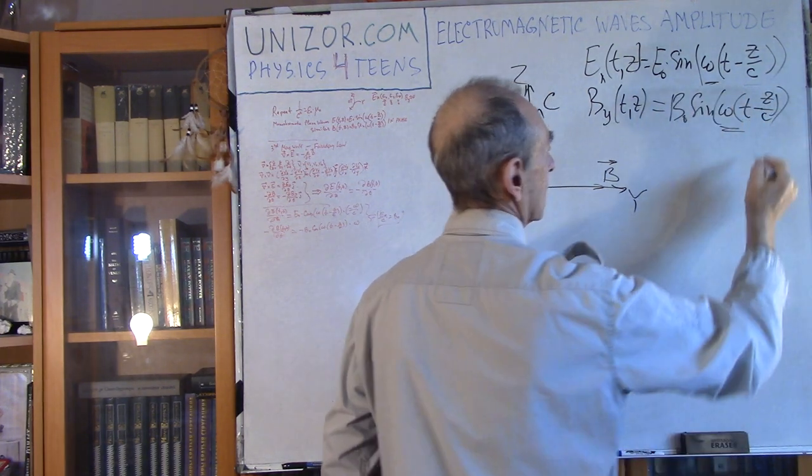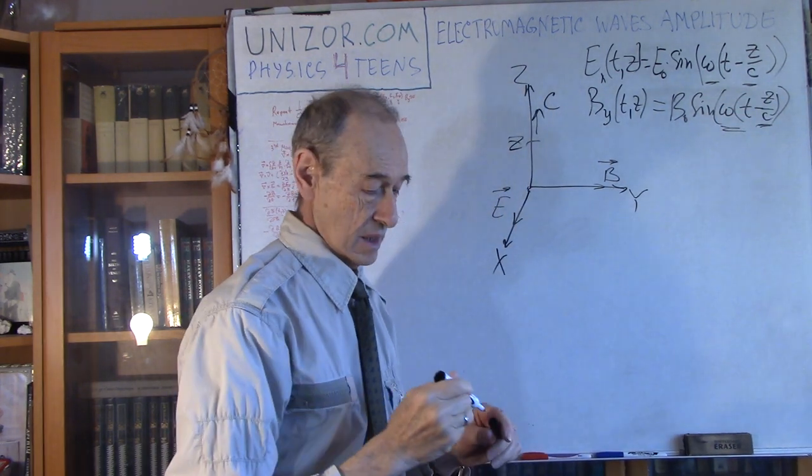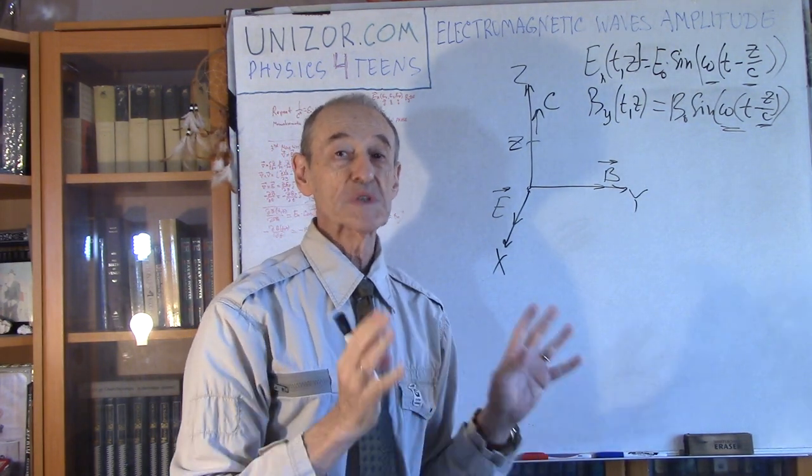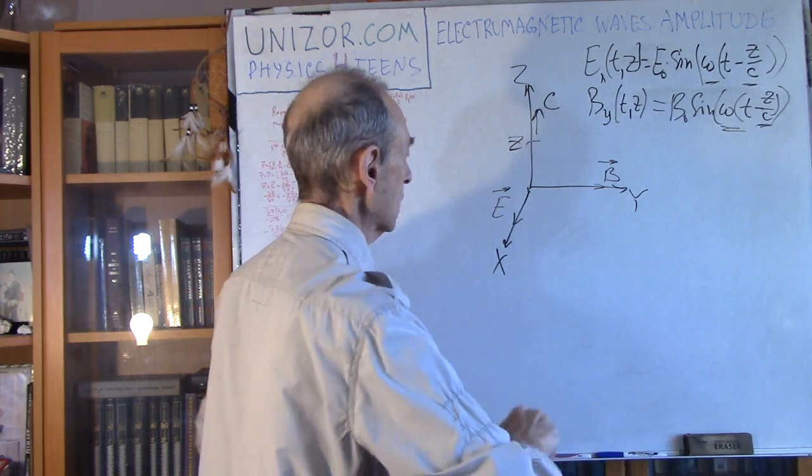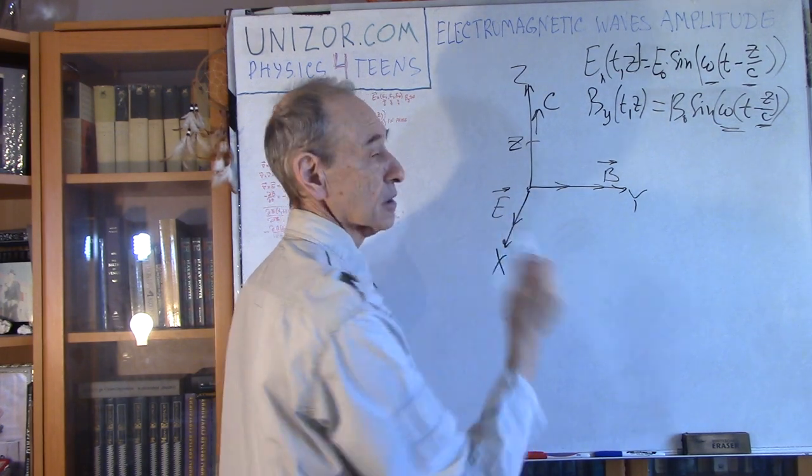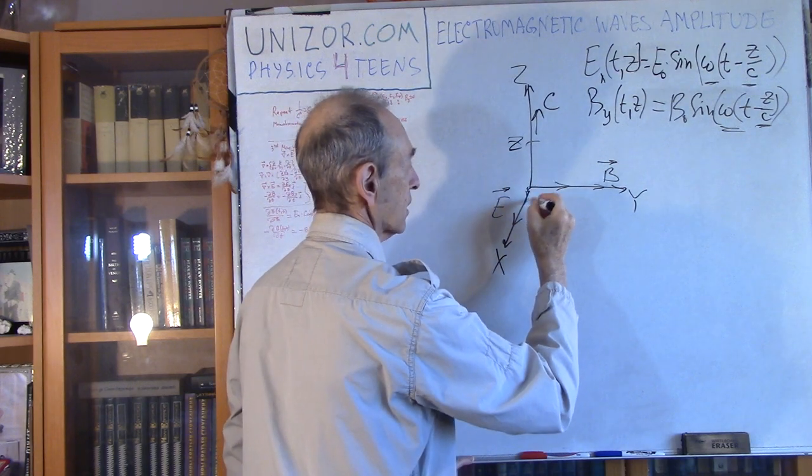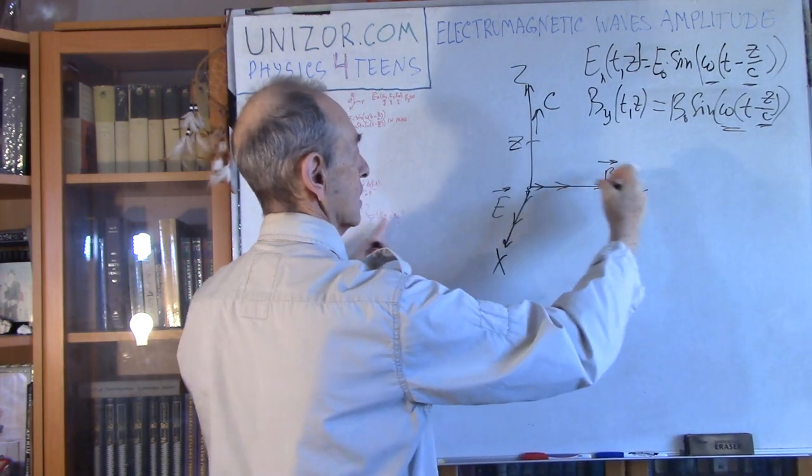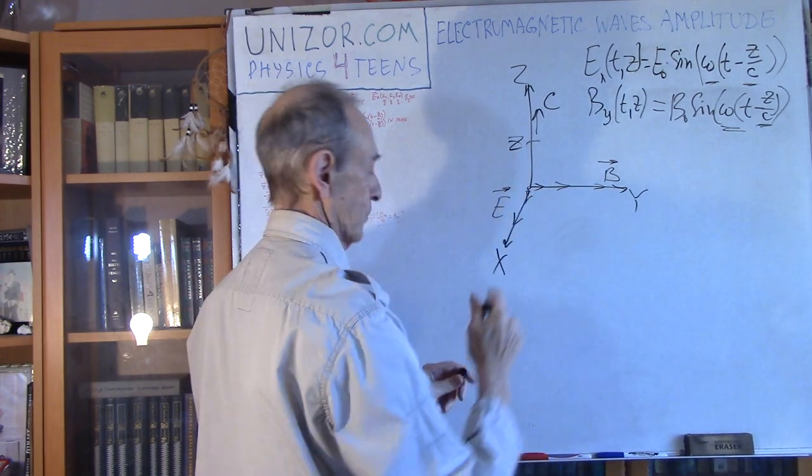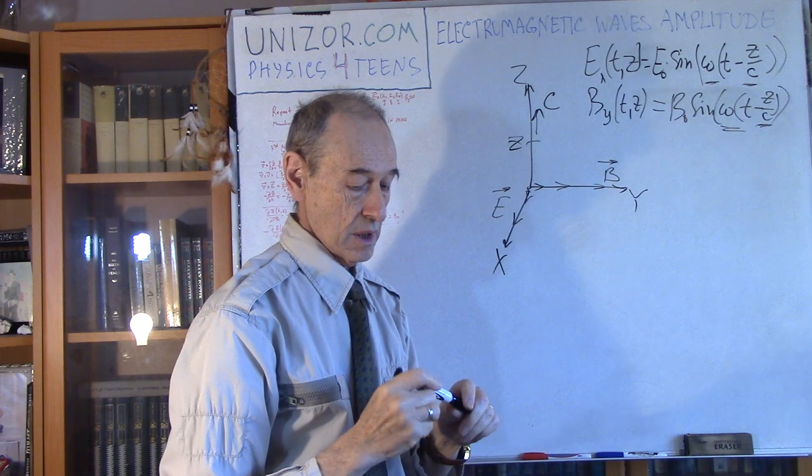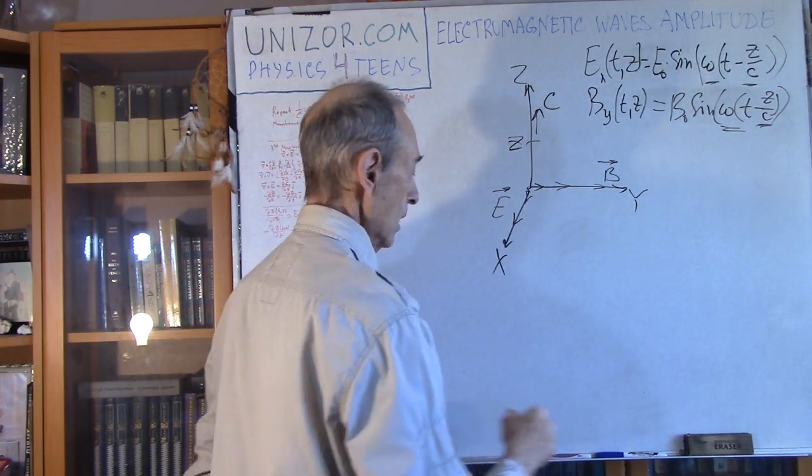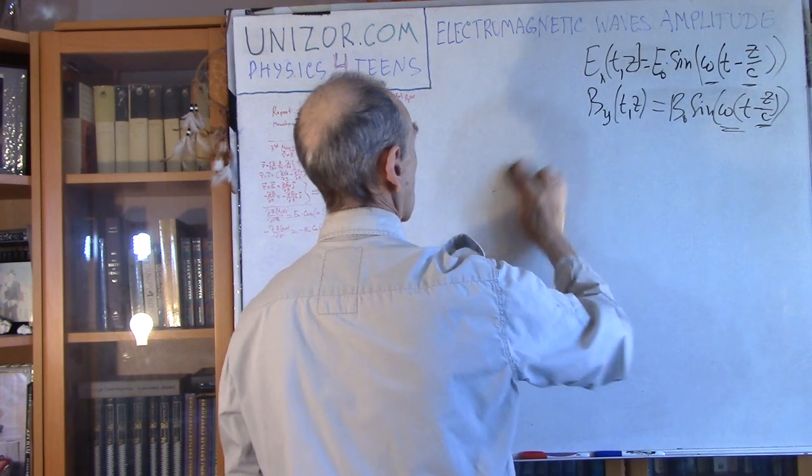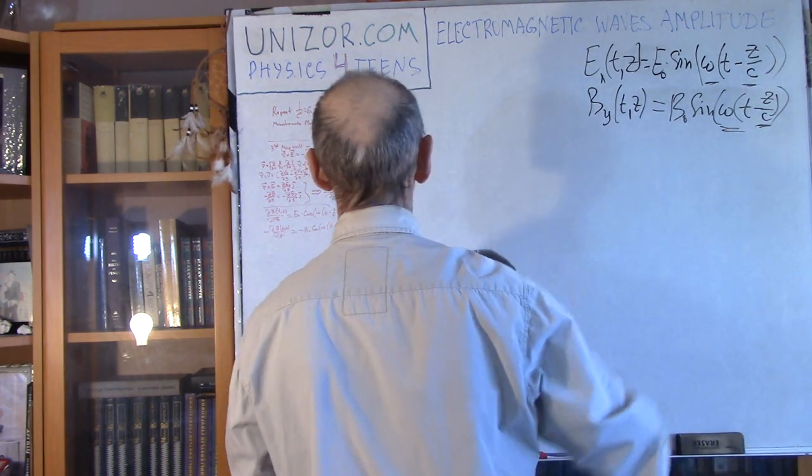What's important is it's the same omega and the same shift in phase, because electric and magnetic components are always in phase with each other. When the magnetic component is increasing, the electric component is increasing as well. When the electric component is decreasing, the magnetic component is decreasing as well. They are always in sync. Then it's propagating with the same speed of light along the z-axis.